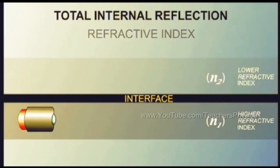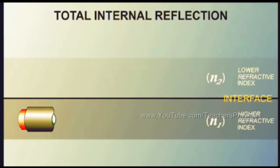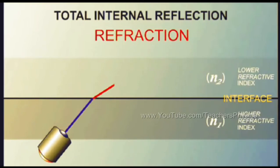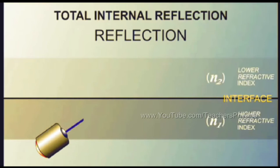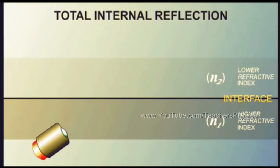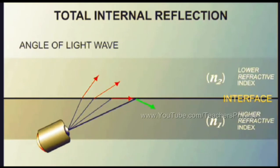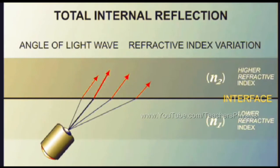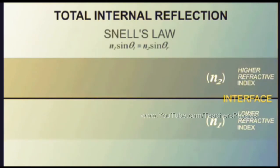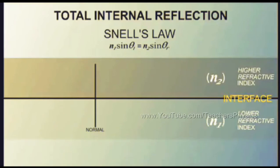The boundary or interface between two mediums is where refraction and reflection occur. Refraction is the bending of a light wave as it passes from one medium to the next; if the second medium prevents light from passing through, reflection occurs. Two factors must be considered: the angle at which the light wave strikes the interface, and the refractive index of one medium relative to the other. Snell's law is used to determine the amount of refraction between two mediums. A line perpendicular to the interface is referred to as the normal. A light wave traveling straight into the new medium along the normal will change speed but not direction.